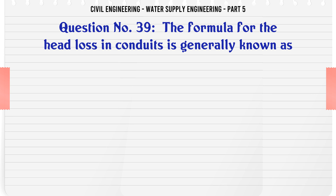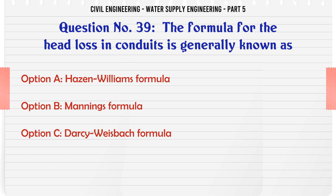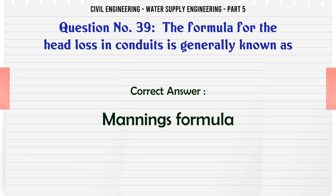The formula for head loss in conduits is generally known as: A. Hazen-Williams Formula, B. Manning's Formula, C. Darcy-Weisbach Formula, D. Nikuradse Formula. The correct answer is Manning's Formula.